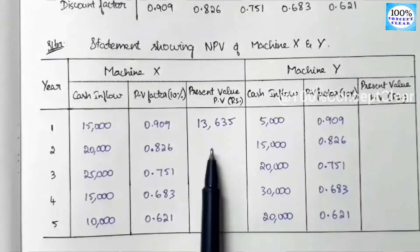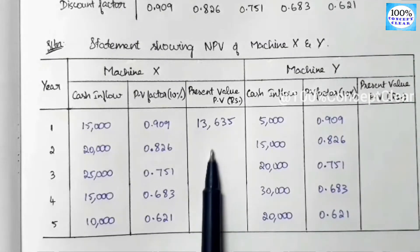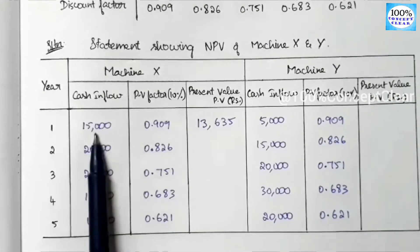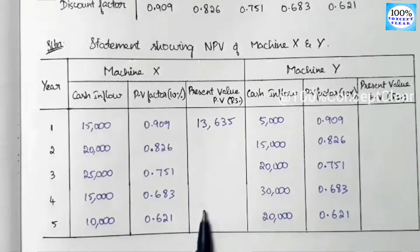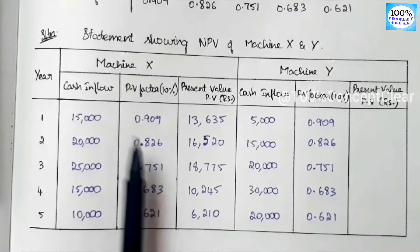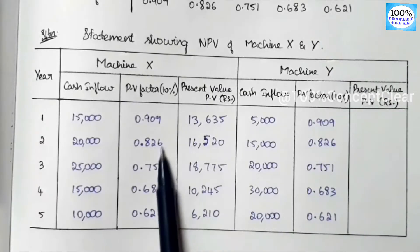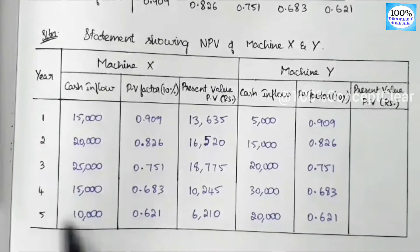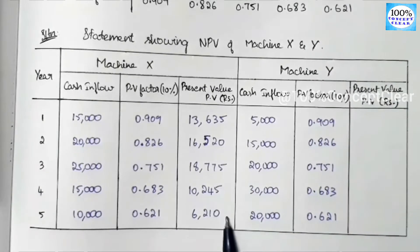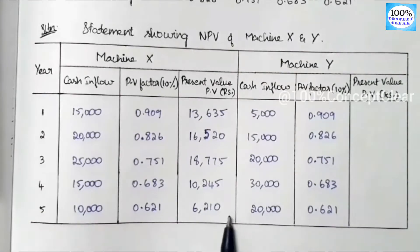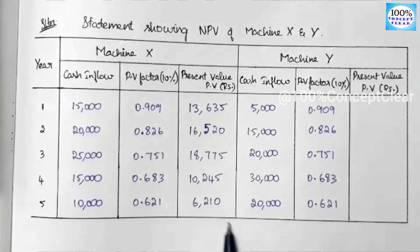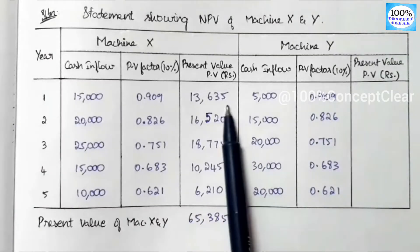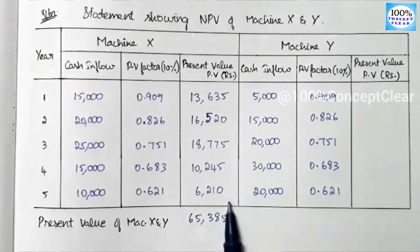We multiply these two values, and the present value in the first year is 13,635. We then repeat this — cash inflow multiplied by PV factor — for all 5 years. If we add all the present values for machine X, we get a total of 65,385.